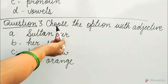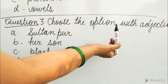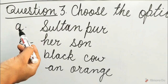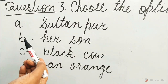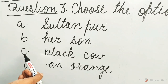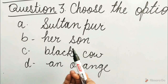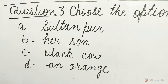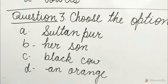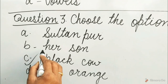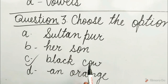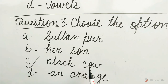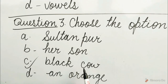Question 3: Choose the option with adjective. Options are A. Sultanpur, B. Harsan, C. Black Cow, D. An Orange. Guess children, which option will be correct? Yes, it is C option — Black Cow. Because black cow represents the color of a noun.